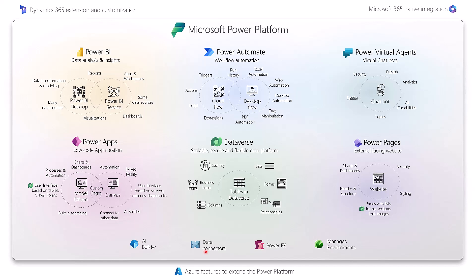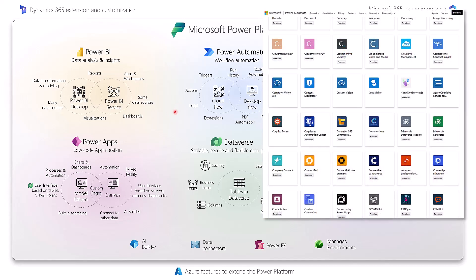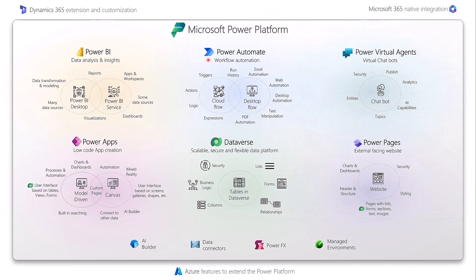Data connectors enable your applications to communicate with each other — they act like bridges where information and commands travel between different applications. Cloud flows use connectors heavily; triggers and actions are tied to connectors. The Dataverse connector, for example, has triggers on record creation or update, and actions to create, update, relate, or list records. There are hundreds — now thousands — of connectors available, including popular ones like Office 365, Twitter, Dropbox, and Google services.